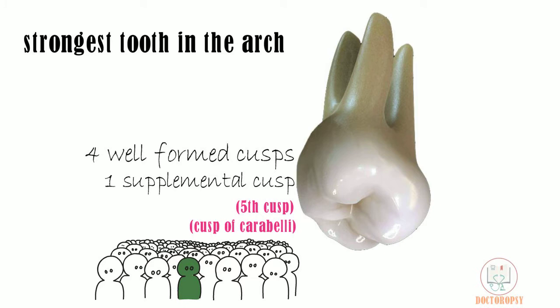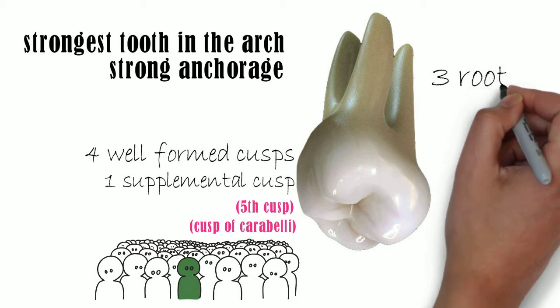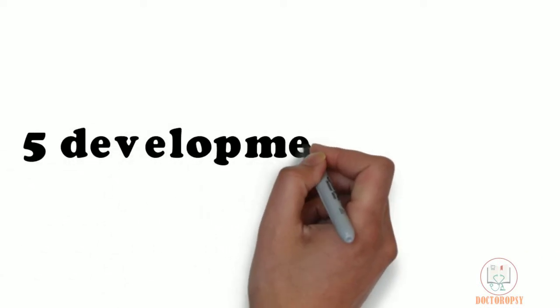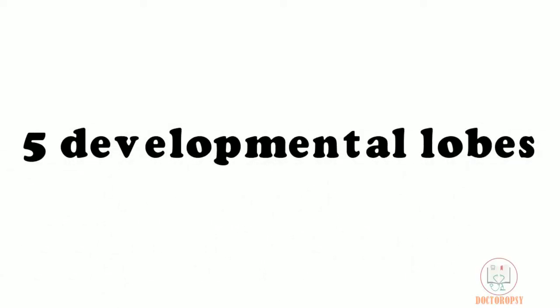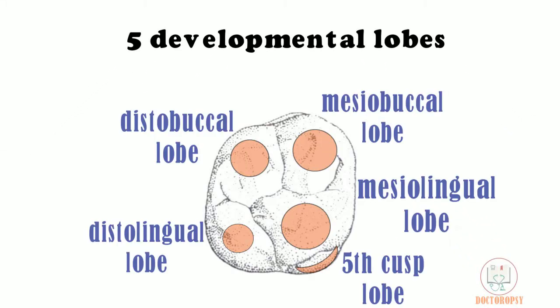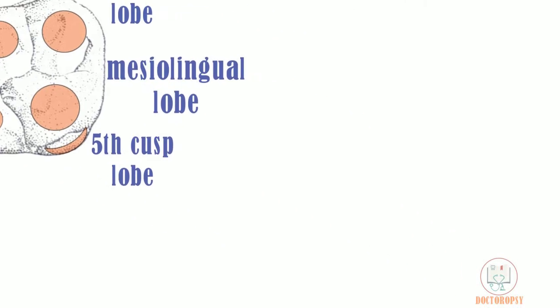As with all maxillary molars, it has a strong anchorage with 3 roots: lingual, mesiobuccal, and distobuccal. The maxillary first molar develops from 5 developmental lobes, one lobe for each cusp.